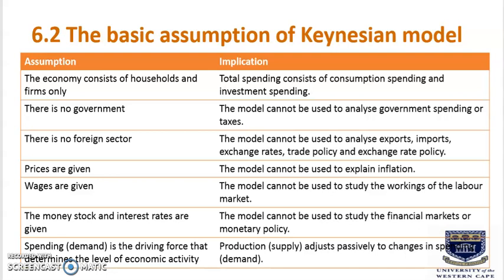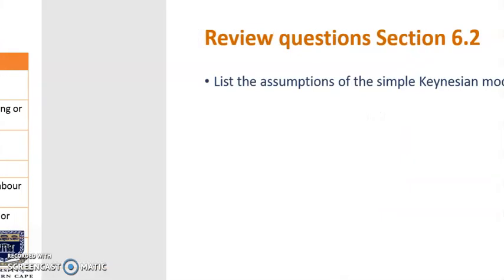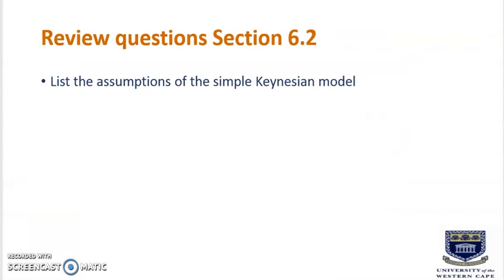Further assumptions: prices are always given, so the model cannot explain inflation. Wages are given, so the model cannot study the workings of the labor market. The money stock and interest rate are given, so the model cannot study financial markets or monetary policy. Finally, spending or demand is the driving force that determines the level of economic activity, meaning production or supply adjusts passively to changes in spending.